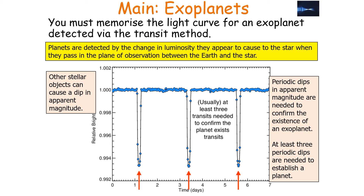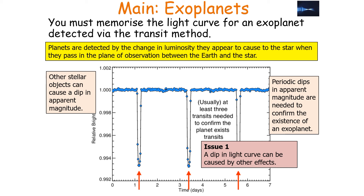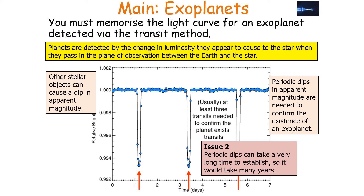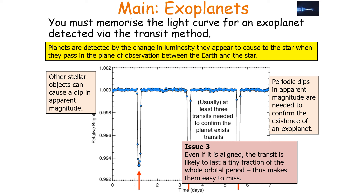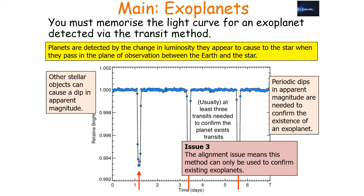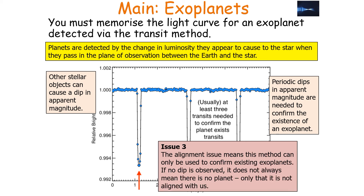There are issues with the transit method. First, a dip in the light curve can be caused by other effects. Second, three periodic dips can take a very long time to establish — potentially many years. Third, the alignment must be correct for the planet and star to eclipse in the plane of the Earth, which is very unlikely. Even if aligned, the transit is likely to last a tiny fraction of the whole orbital period, making it easy to miss. This alignment issue means the method can only confirm existing exoplanets and not rule them out, since no observed dip doesn't necessarily mean there's no planet.